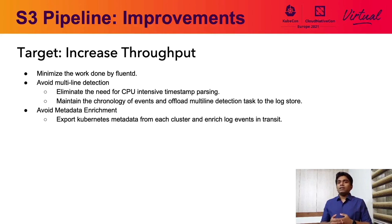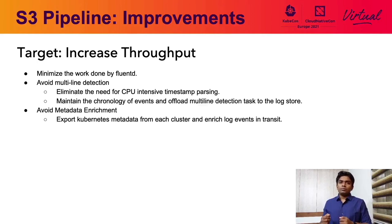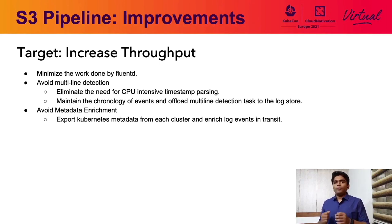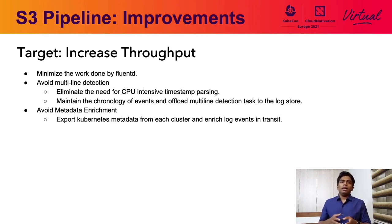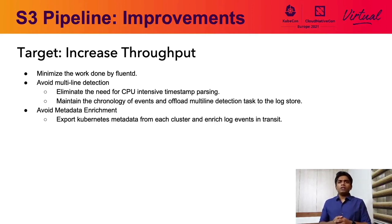Fluentd is deployed in the cluster as a daemon set, ensuring there is a single pod in every node. Each pod is responsible for transporting logs from all the containers in that node, regardless of how big that node is. From this we can realize that this pod will become the bottleneck and the weakest link in the chain. The throughput will be set by the amount that can be transported by a single pod. The biggest gain in throughput can be achieved by making the daemon set process and transport more and more events. One mechanism to achieve this is to do as little processing as possible at the daemon set pod — that is the key to note in the new pipeline design.